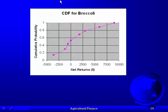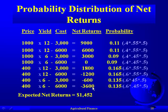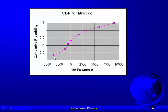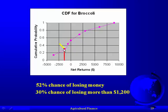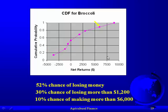Now that we have this cumulative distribution function, what do we learn? Returns range all the way from negative $3,600 to $9,000. Notice that there's a 52% chance that profits will be less than zero — in other words, every other year we're going to lose money. There's a 30% chance — one in three years — that we're going to lose more than $1,200. However, there's a 10% chance that we'll make more than $6,000; every one in ten years, so to speak, you're going to hit it big.